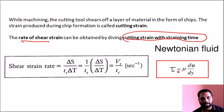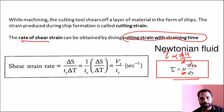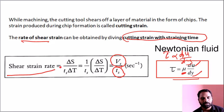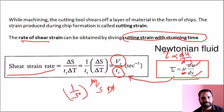This concept comes from fluid mechanics. In fluid mechanics, shear stress is directly proportional to the rate of shear strain, expressed as du/dy. The proportionality constant is dynamic viscosity μ. Here, du/dy becomes Vs (shear velocity) divided by Ts (thickness of shear plane). So shear strain rate equals Vs divided by Ts, and the unit is 1 per second (s⁻¹).